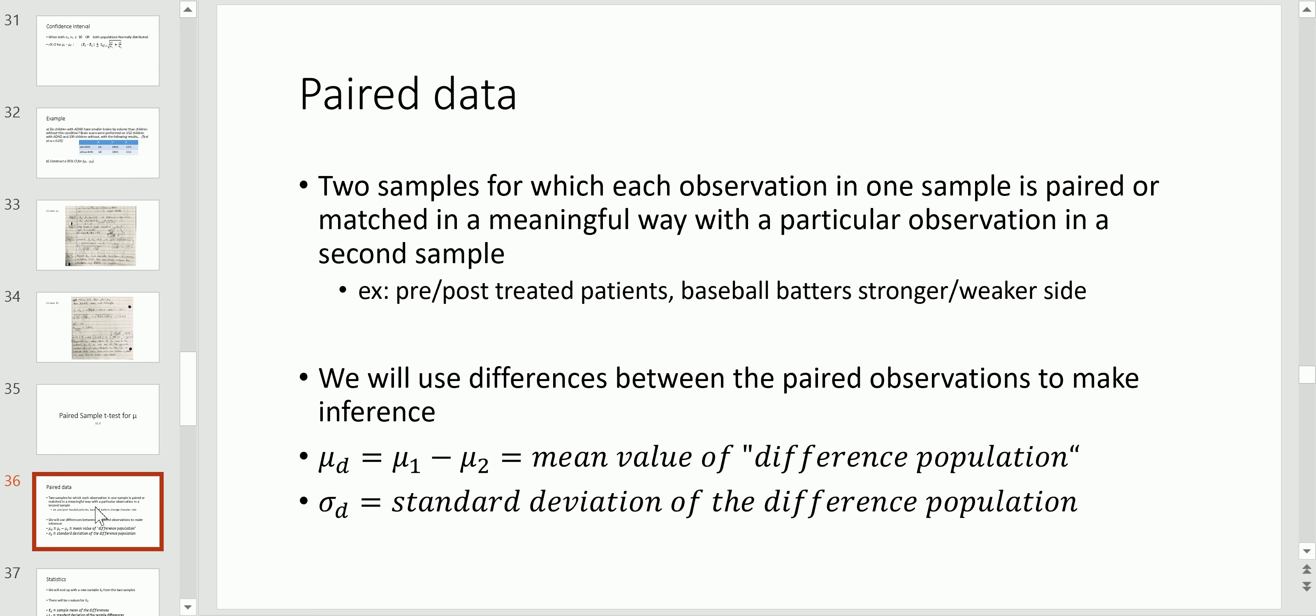So in each of these examples you can see that there's a connection between the observation from the first sample to the observation in the second sample. You could call it pre-post, but it doesn't have to be framed in time. So this is a marked difference to the topic that we just talked about previously, which was in comparing two means from independent samples.